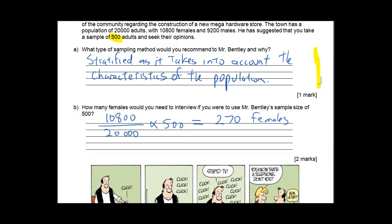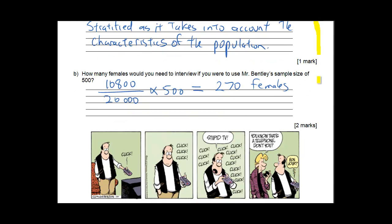Otherwise you'll get a biased result. So a stratified sample will take into account the characteristics of the population and taking the characteristics of the population means that your sample is going to be representative of the population. So how many females would you need? You get the number of females which is 10,800 divided by the total population there and times it by your sample size which you've been given. So that gives you 270 females. Remembering that this has to be a full number and this one's worked out at 270 so that's what you need.